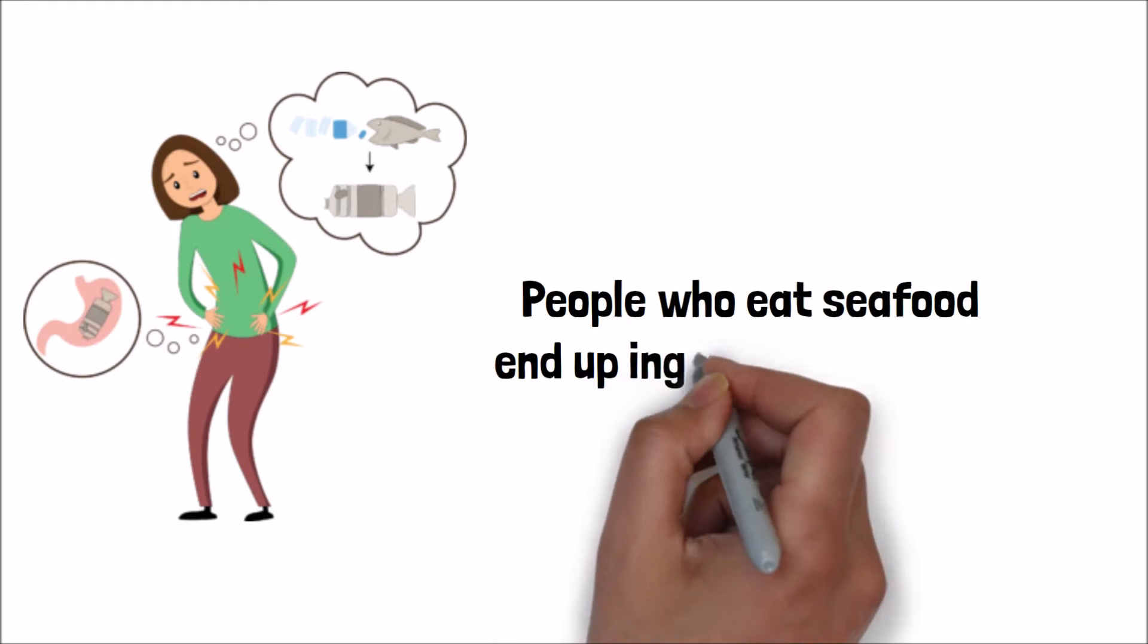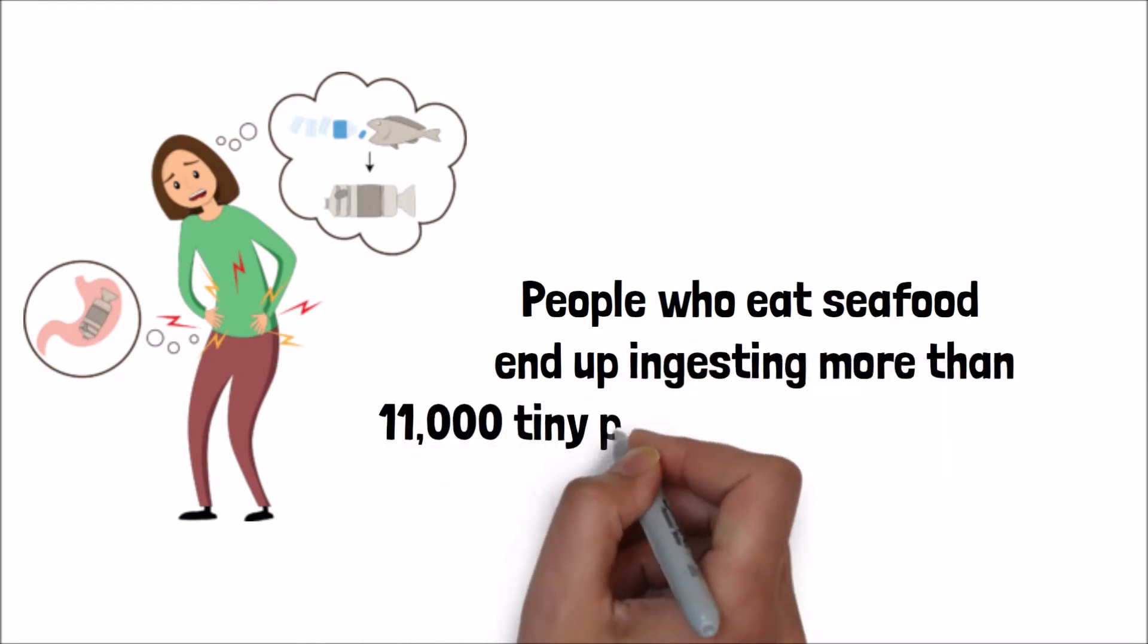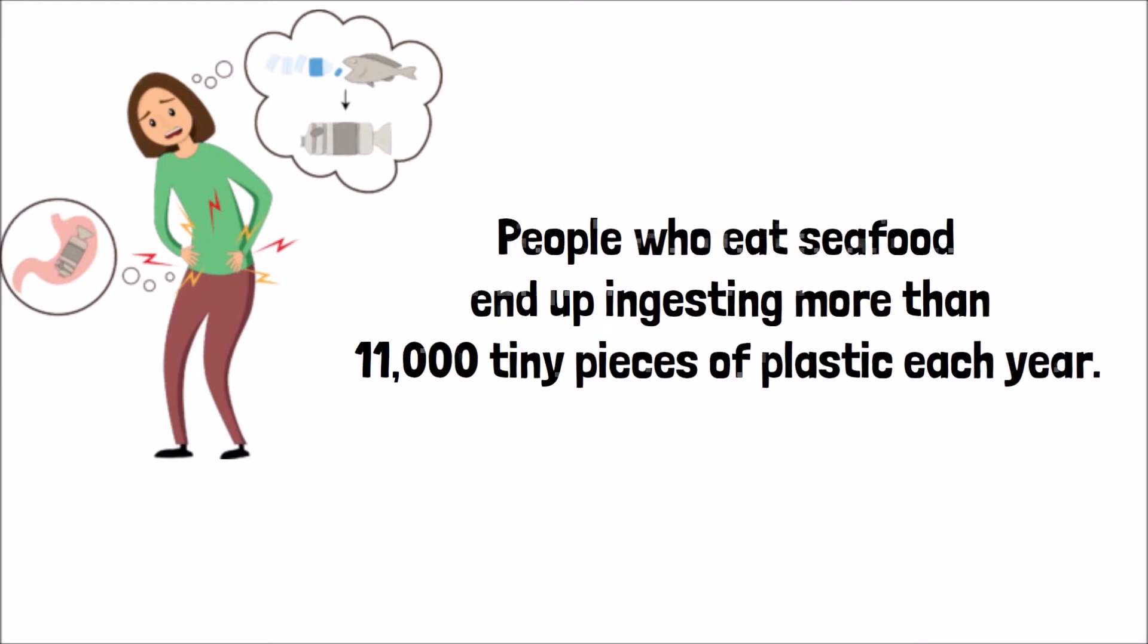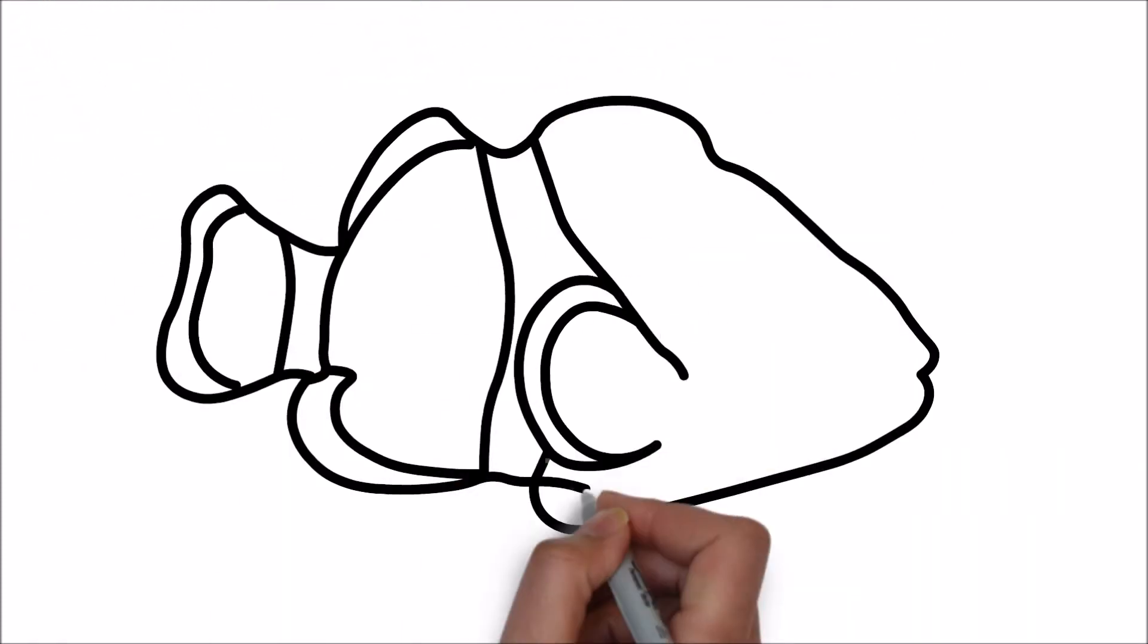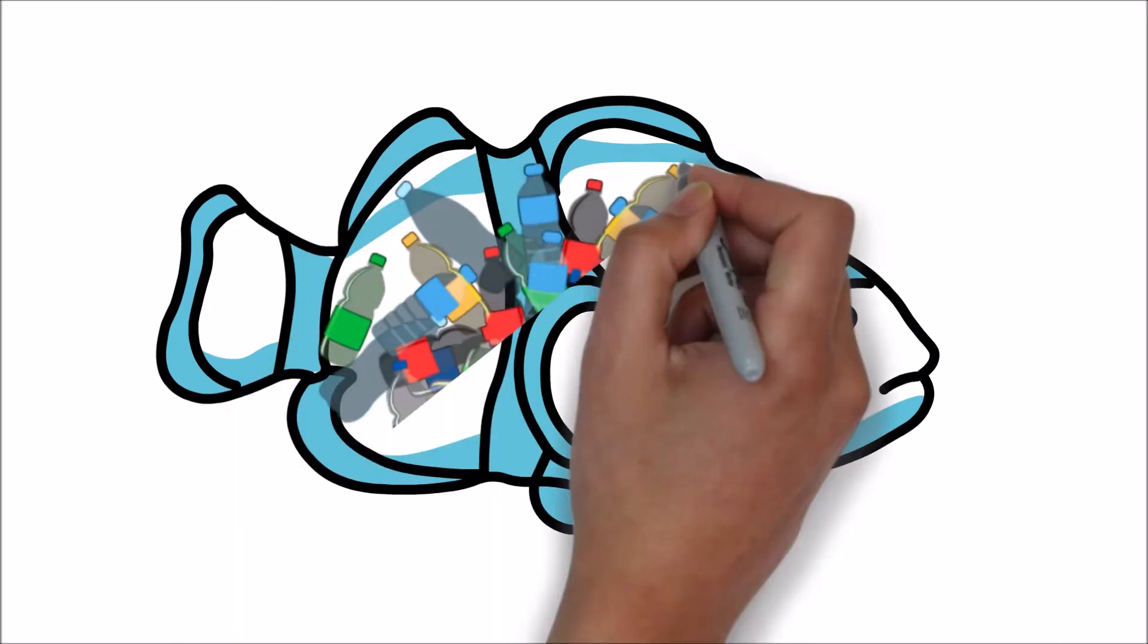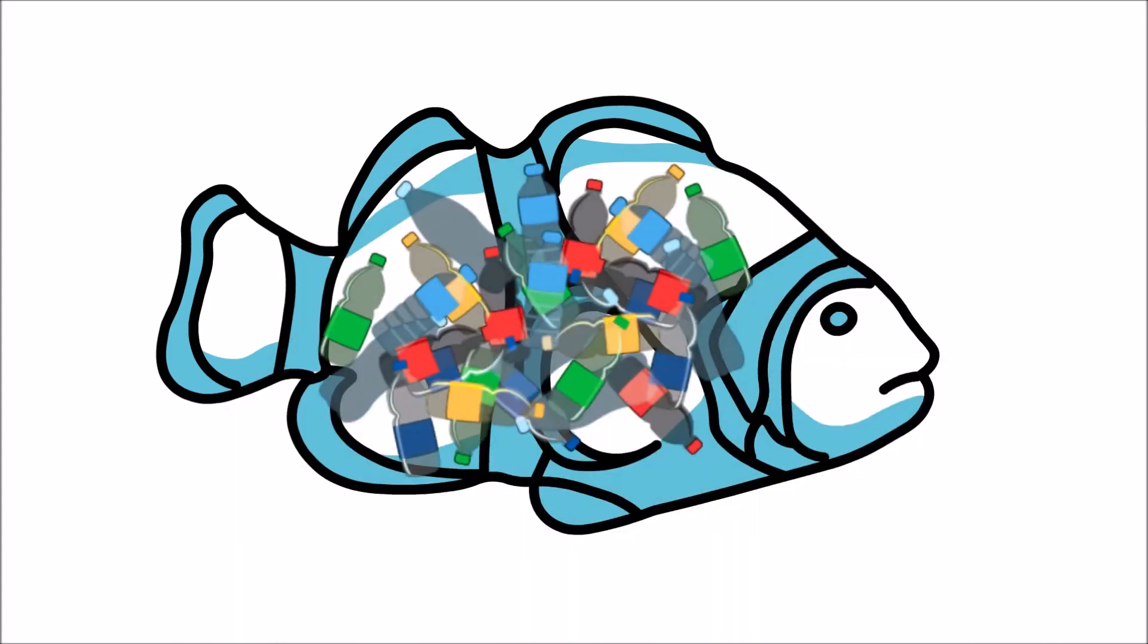A study at Plymouth University found that one-third of the UK's caught fish, including cod, haddock, mackerel, and shellfish, had plastic found in their digestive system. Therefore, the European Food Safety Authority called for urgent research on microplastic pollution.